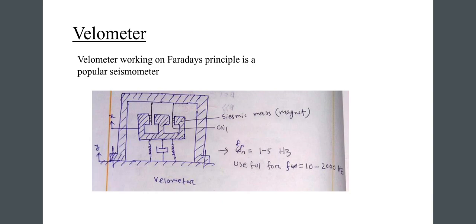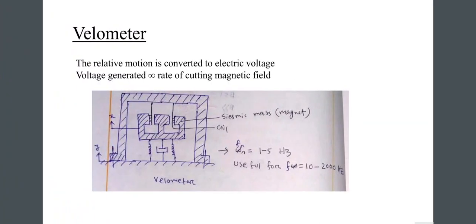The next topic is the velometer. A velometer works on Faraday's principle and is a popular type of seismometer. The seismic mass is a magnet surrounded by a coil, and it is used for frequencies from 10 to 2000 Hz. The relative motion is converted to an electric voltage generated proportional to the rate of cutting magnetic field lines.